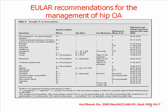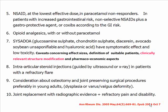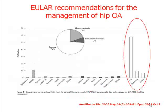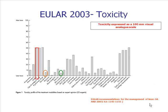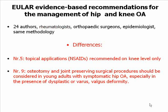There are only two differences regarding the recommendations for the management of hip and knee osteoarthritis. Recommendation number five, dealing with the topical application of non-steroidals, is recommended only at the knee level, while for the hip, a second surgical recommendation has been included, covering osteotomy and other joint-preserving surgical procedures.